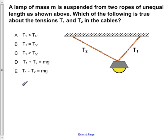A lamp of mass M is suspended from two ropes of unequal length as shown above. Which of the following is true about the tensions T1 and T2 in the cables?